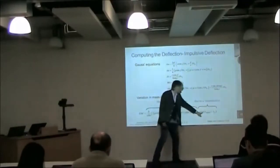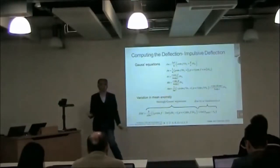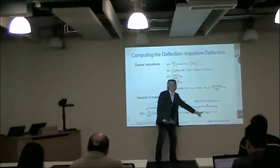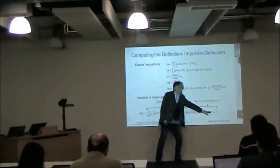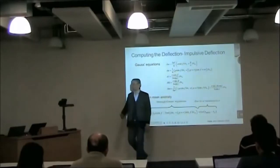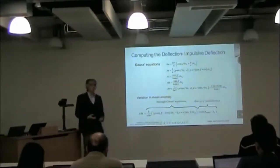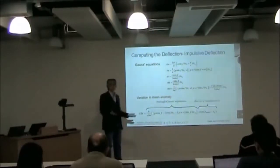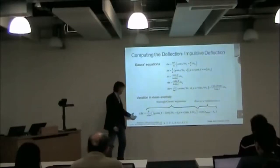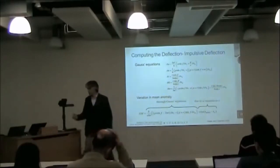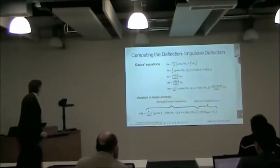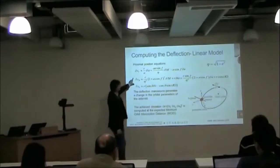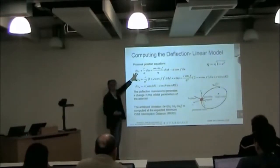N is a function of the semi-major axis, so if I change the semi-major axis I change the mean angular velocity, and this propagates with time — it multiplies time. So if I have a delta N which is different from zero, I just need to wait and that quantity keeps on increasing. When I plug it back into the equation, I have two terms that grow with time.